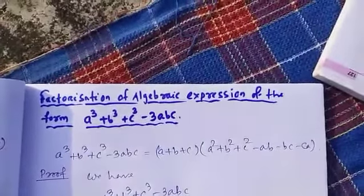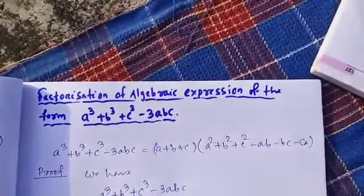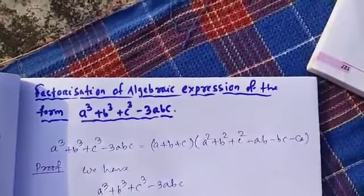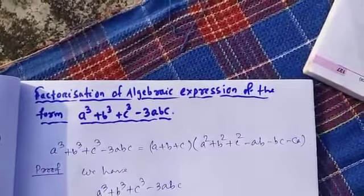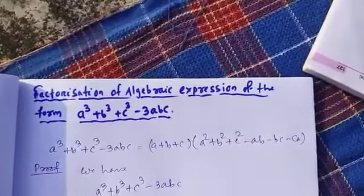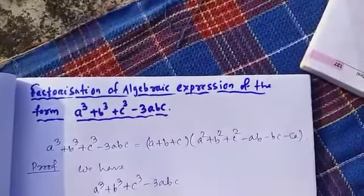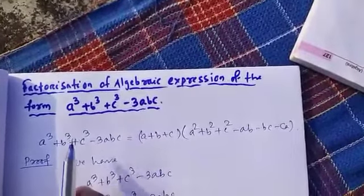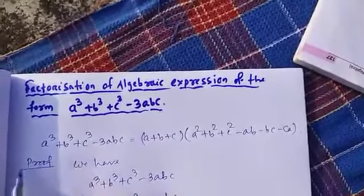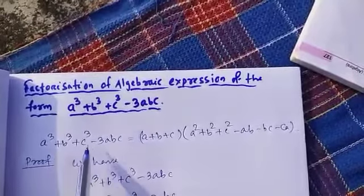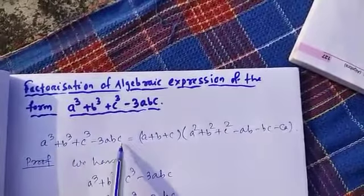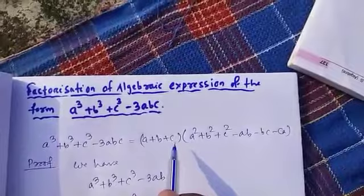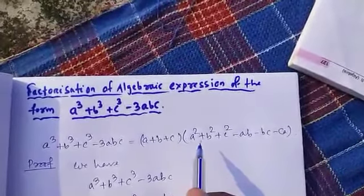Let's see the factorization of a³ + b³ + c³ - 3abc. In order to factorize the algebraic expression of the form a³ + b³ + c³ - 3abc, we use the following identity: a³ + b³ + c³ - 3abc = (a + b + c)(a² + b² + c² - ab - bc - ca).